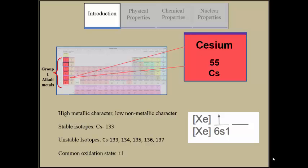Cesium has over 40 known isotopes. Some of the known isotopes are cesium-133, 134, and 137.